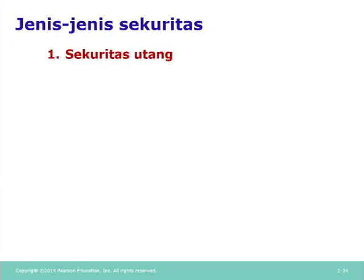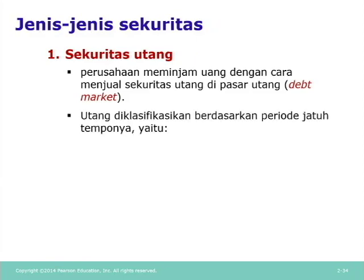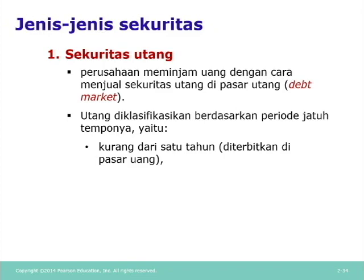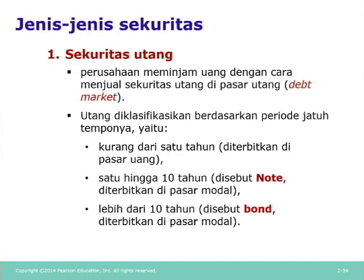Ada beberapa jenis sekuritas, yaitu sekuritas hutang. Perusahaan meminjam uang dengan cara menjual sekuritas hutang di pasar hutang (debt market). Hutang diklasifikasikan berdasarkan periode jatuh temponya: kurang dari 1 tahun diterbitkan di pasar uang; 1 hingga 10 tahun biasa disebut notes dan diterbitkan di pasar modal; lebih dari 10 tahun disebut bonds atau obligasi dan diterbitkan di pasar modal, meskipun kini beberapa bonds jatuh temponya bisa kurang dari 10 tahun.